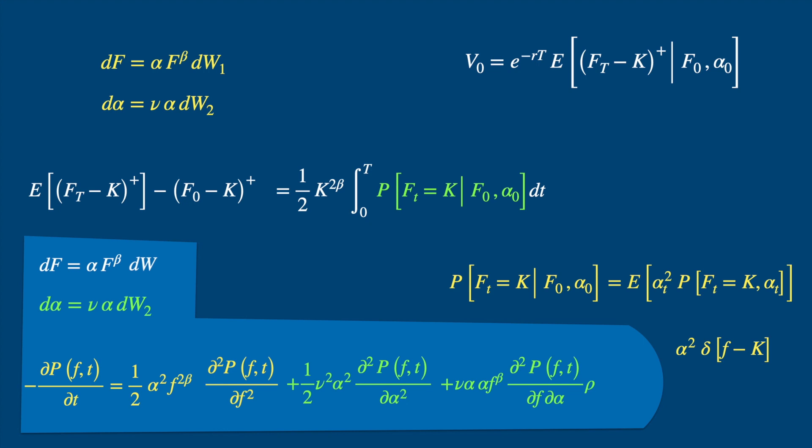Now if you solve this equation subject to the terminal condition, and plug the expression into the valuation equation, you will get the price of the European option under the Sabre model. But this equation can't be solved in general, and that's why these guys approximated it using perturbation methods.